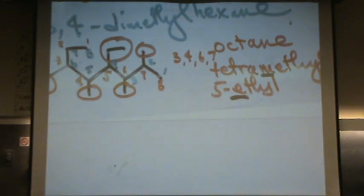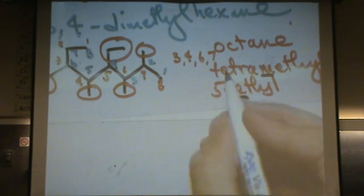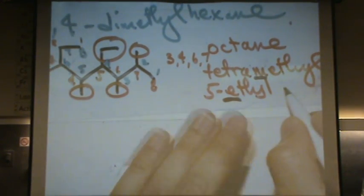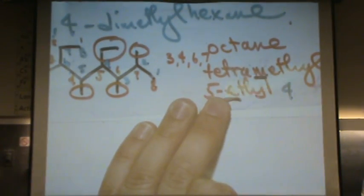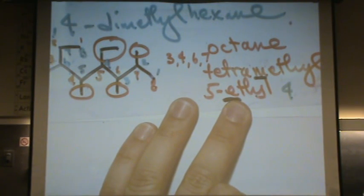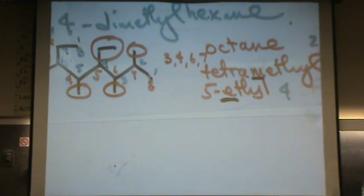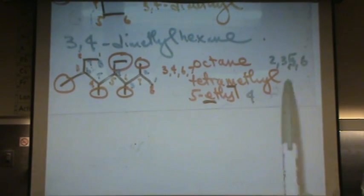The reason I'm going through this is we want to find which set, numbering from the left as one or the right as one, will give us the lowest set of numbers. In green, what would the ethyl be? It'd be four. And tetramethyl, in green, would be two, three, five, six. Which is the lower set of numbers? Green or red? Green. The one on the right. Two, three, five, six. That's where I wrote it right there.